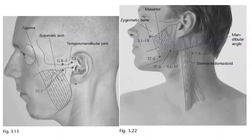Here we have an illustration showing the zygoma, the zygomatic arch, and the temporomandibular joint relative to the points GB3, Triple Burner 22, Triple Burner 21, and Stomach 7. Another illustration shows the masseter, the zygomatic bone, the mandibular angle, and the sternocleidomastoid muscle relative to Triple Burner 16, SI17, Stomach 6, Stomach 5, and SI18.